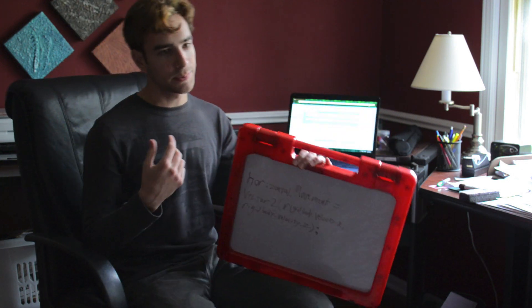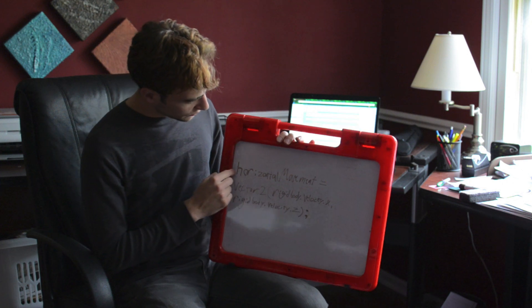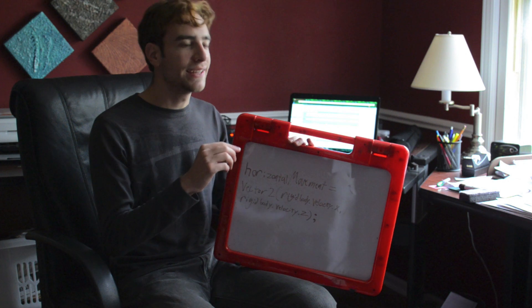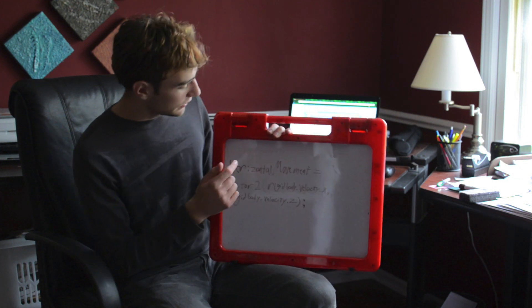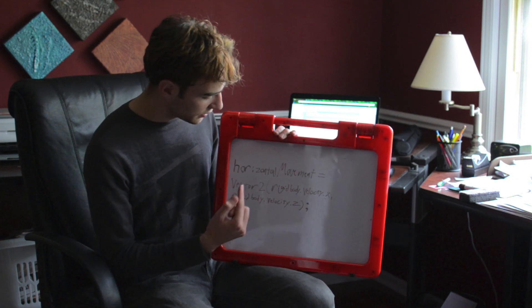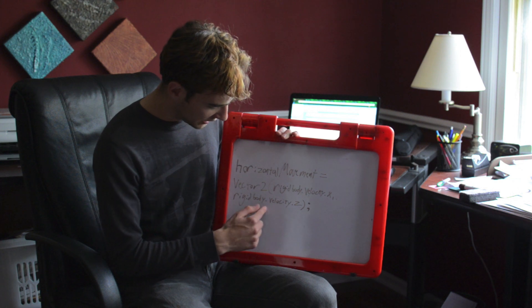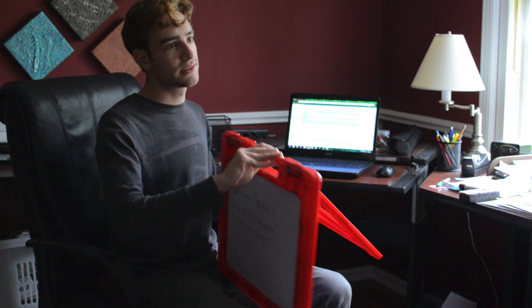We need to save the X and Z movement into a vector2 so we can measure the magnitude of the vector and modify it as needed. We save rigidbody.velocity.x and rigidbody.velocity.z into horizontal movement. Since horizontal movement is a vector2 with an X and a Y, we use Y to represent Z. We don't need to limit Y velocity because that's jumping and falling.